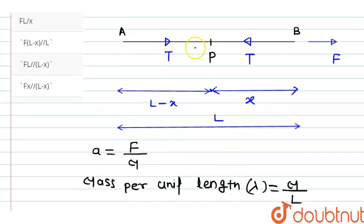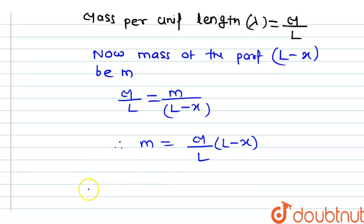Now for the part AP of length L minus x, tension in the string is capital T.